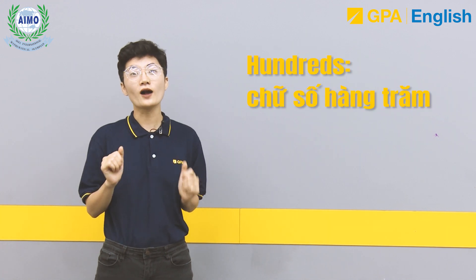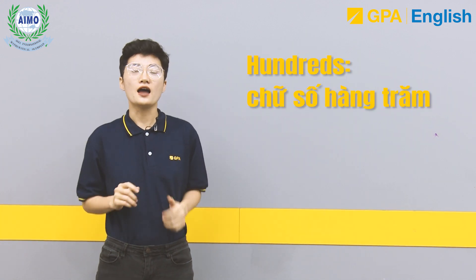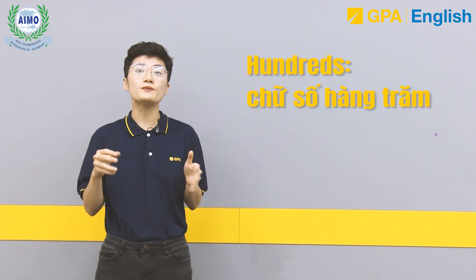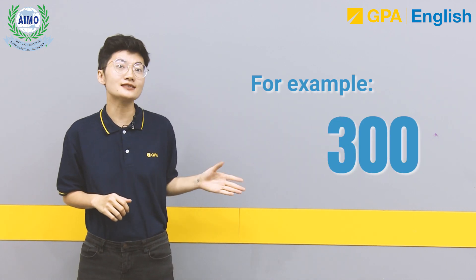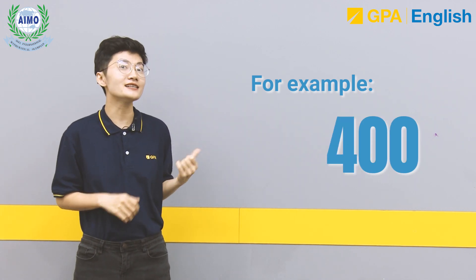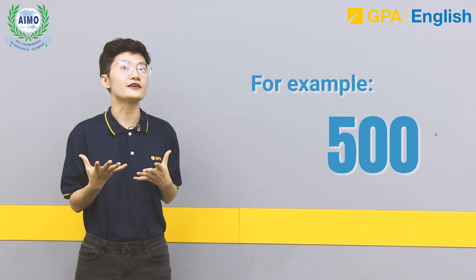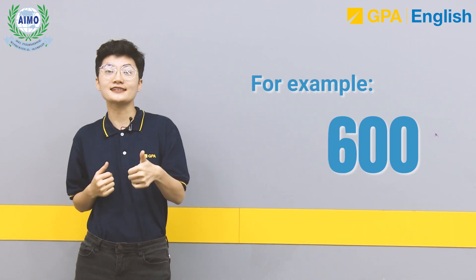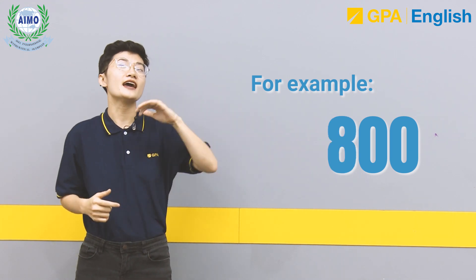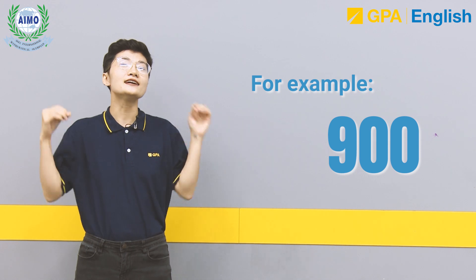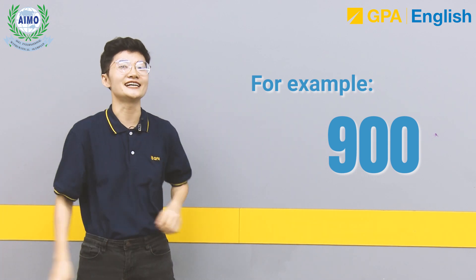100 — chữ số hàng trục — 100 is a group of tens of tens. For example, 100, 200, 300, 400, 500, 600, 700, 800, and 900.